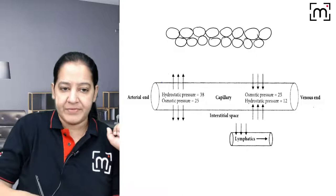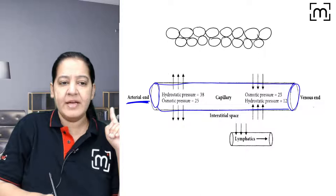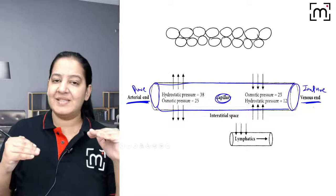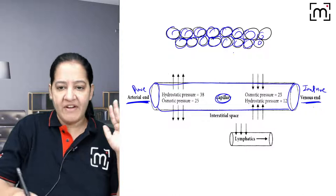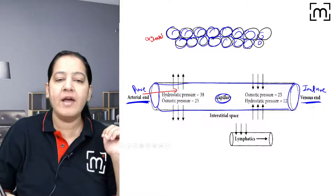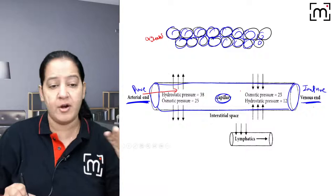All capillaries supply blood to some organ. The organ is made up of cells. When pure blood enters at the arterial end, why do all organs require blood? All cells require oxygen, and oxygen comes from blood only. So when blood passes through the arterial end, this is the critical exchange point.